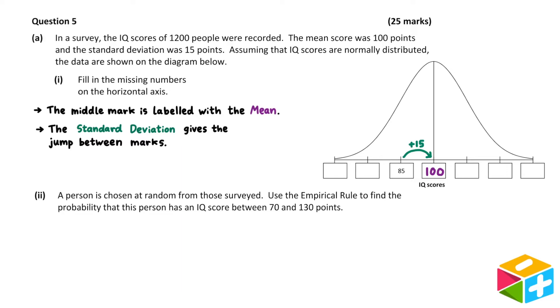Now that we know the jump is 15, we can fill in the remaining labels. 100 plus 15 is 115. 115 plus 15 is 130. And 130 plus 15 is 145. On the other side, 85 minus 15 is 70. And 70 minus 15 is 55.